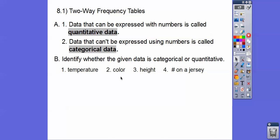How about color? Can we average colors and make sense? Not really. So this one's categorical. Height is quantitative. So you can take the average height of the students.